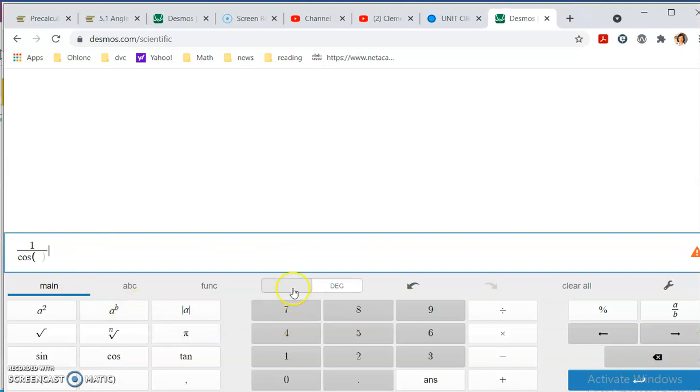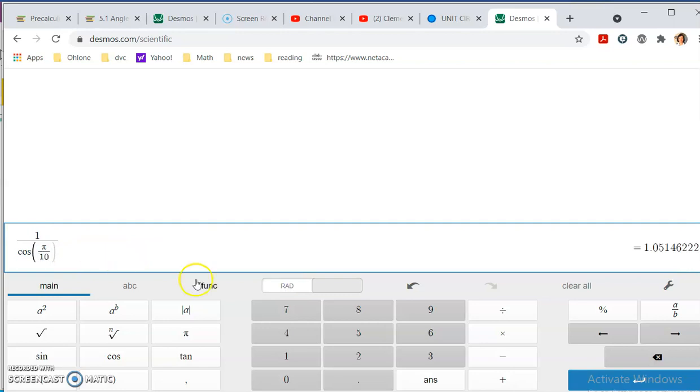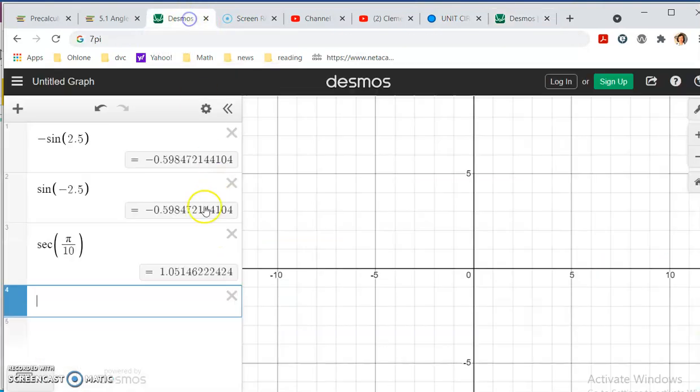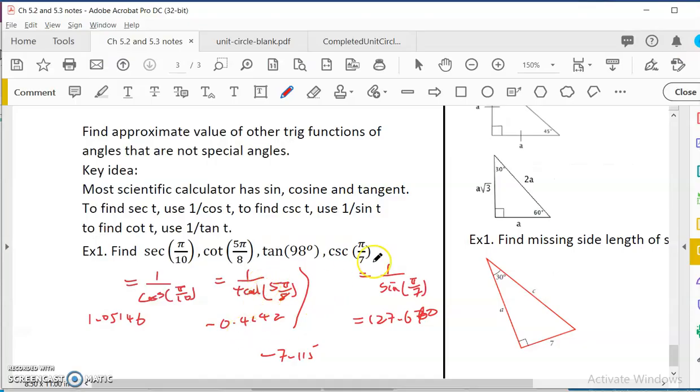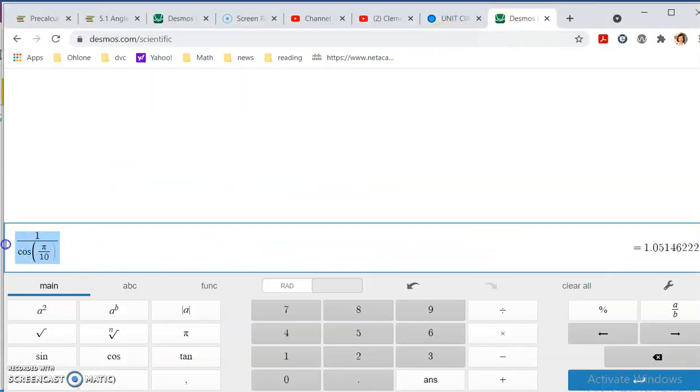I have to make sure that it is in radian. And it is pi over 10. Like that. So it is 1.05146. That one is also 1.05146. So if it's in radian, you can just do it in the graphing calculator. If it's in degree, you have to do it in the scientific calculator. And for handheld scientific calculator, make sure that you change your mode accordingly.